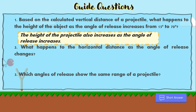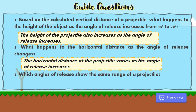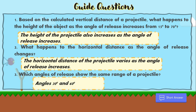Based on the calculated data: the height of the projectile increases as the angle of release increases from 15 degrees to 70 degrees. The horizontal distance of the projectile varies as the angle of release increases. The angles that show the same range are 30 degrees and 60 degrees, both giving a range of 141 meters. And that is all about our lesson for today. Stay tuned for our next topic. Goodbye for now!